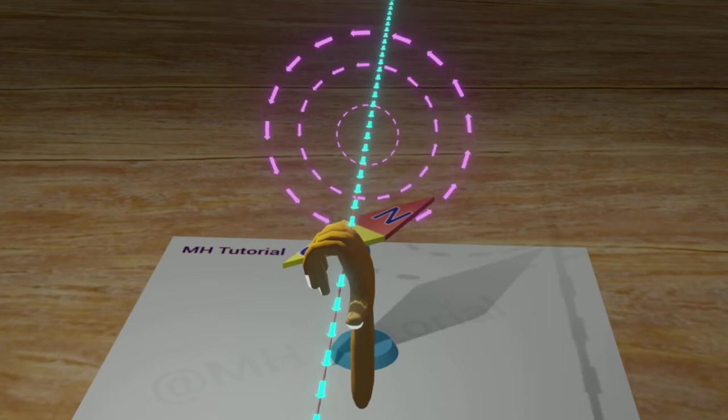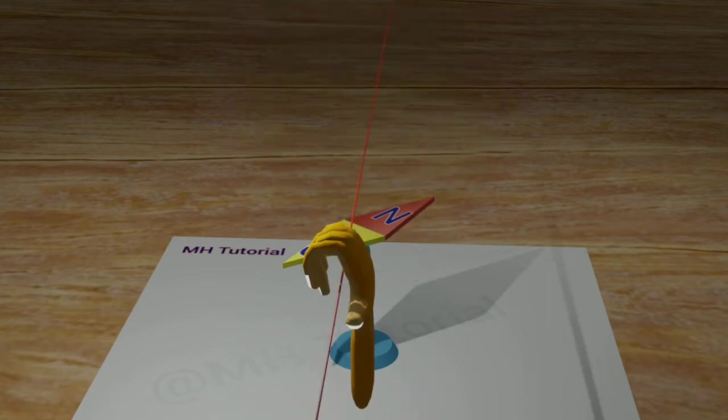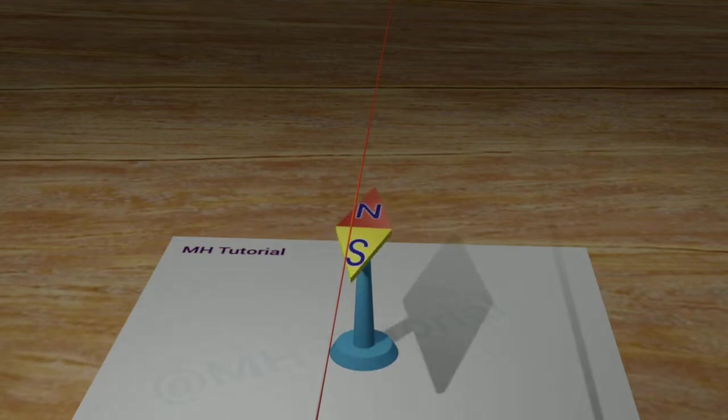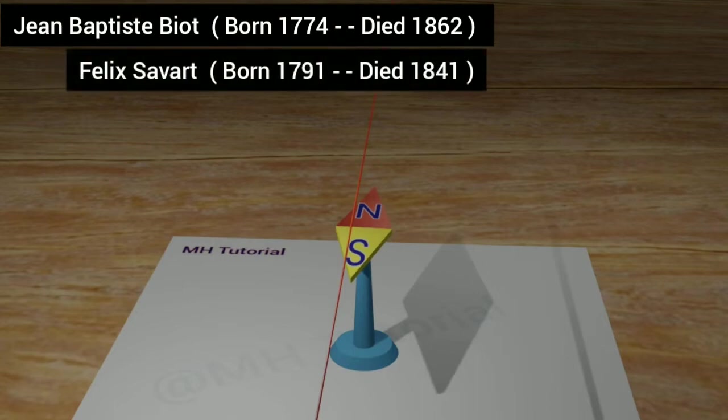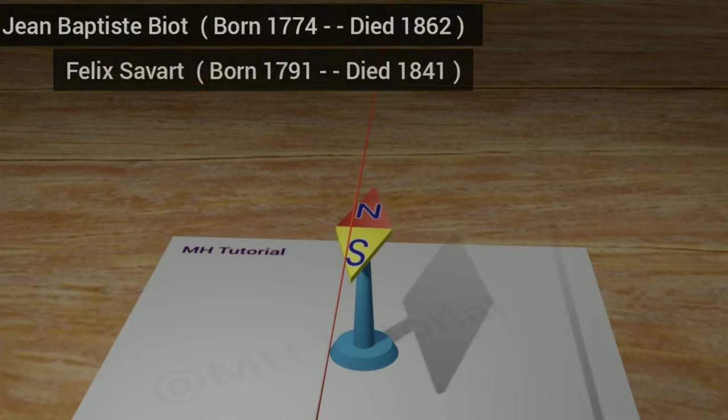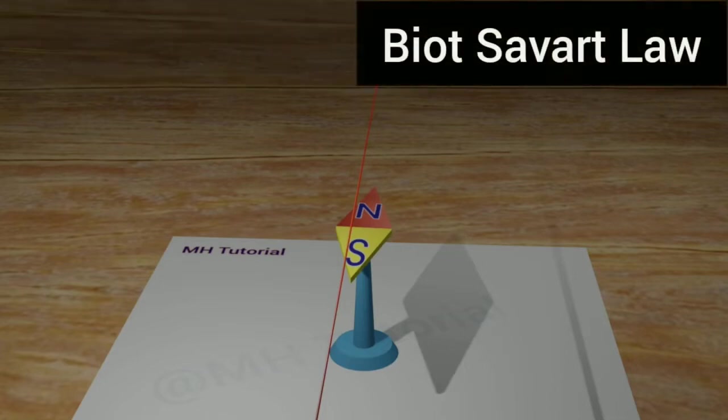Still, he couldn't give any idea about the amount of magnetic field generated in this procedure. But later in this year, two French physicists, Jean-Baptiste Biot and Felix Savart, gave the complete mathematical tool to calculate the magnetic field. Thus, it is known as the Biot-Savart law.